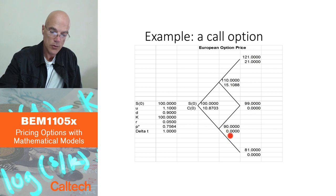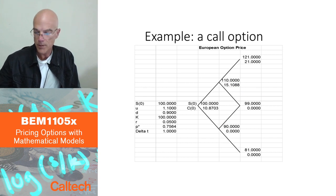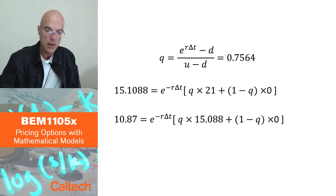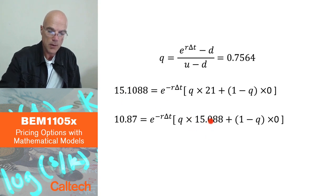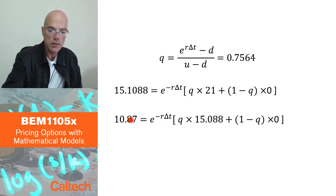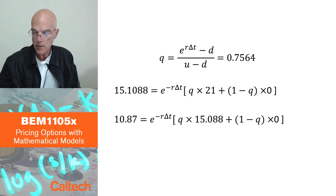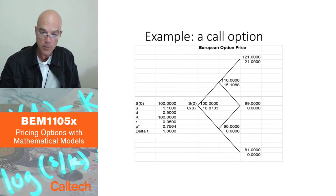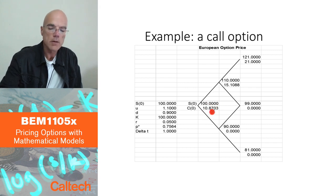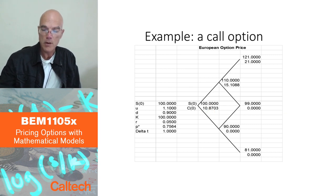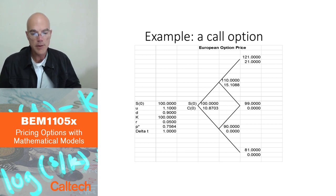Now, to get the price today, I have to average this one, 0 and 15.1088, in the same way. Completely the same way. So I do that. Q times this number, q times 15.08, plus 1 minus q times 0, discount, and I get 10.87. That's my price. If I believe in this model, of course, this is a very simplified, simplistic model. But assuming this model is what you are working with, the price, and you assume that's your approximation of reality, this would be the price of the option, the no-arbitrage price of the option in this model, 10.87 something.